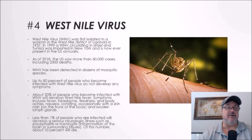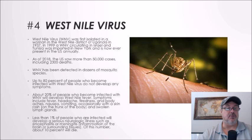Number four: West Nile virus. West Nile virus was first isolated in a woman in the West Nile district of Uganda in 1937. In 1999, a West Nile virus circulating in Israel and Tunisia was imported into New York and is now ever-present in the US. As of 2018, the US had seen more than 50,000 cases including 2,300 fatalities since 1999.